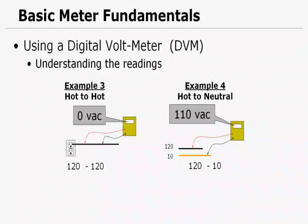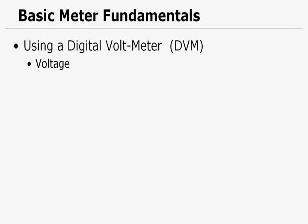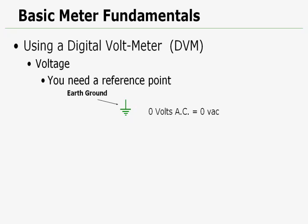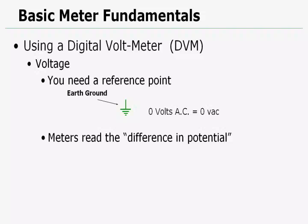So by understanding those readings, you're going to have a better understanding of what we're looking for and what kind of things we're going to find as we troubleshoot an irrigation system. You also need to remember, we have to have a reference point. And our reference point is earth ground. And earth ground is zero volts. Very important. And as stated before, just as a reminder, meters read the difference in potential.